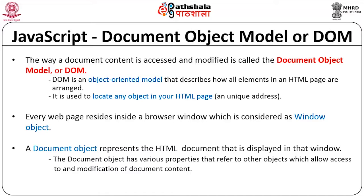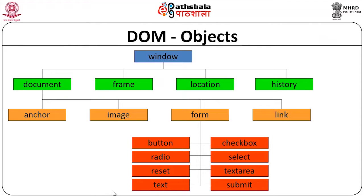The document object has various properties that refer to other objects, which allows access and modifications to the document content. We can see a hierarchy showing how DOM identifies every object of a document displayed on a web browser.